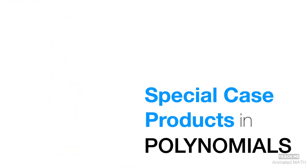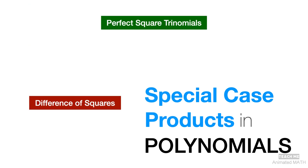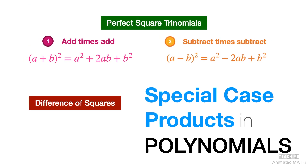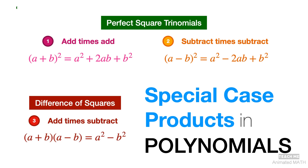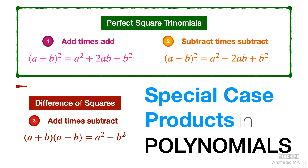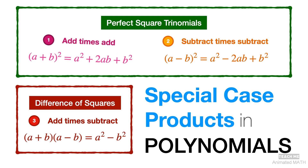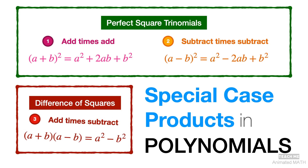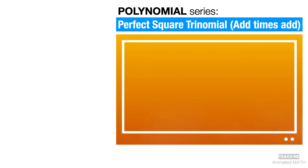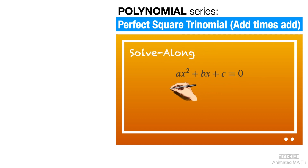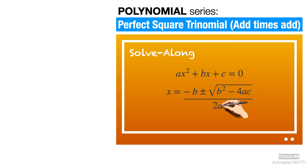And that's it! I hope you learned a lot in the fifth video of our animated polynomial series. It is easy to identify and simplify special case products in polynomials when you understand how to reconstruct these three patterns using polynomial multiplication. Our next video is a perfect square trinomial solve alone worksheet to help sharpen your instincts in identifying and solving them, with step-by-step solutions that are very easy to follow. Be sure to subscribe to Teach Me Animated Math, and don't miss out!